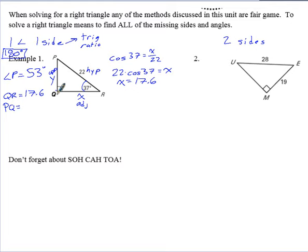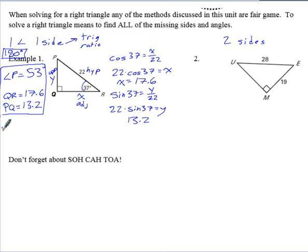And then to solve for PQ, same thing. We can use our reference angle of 37 and do opposite over hypotenuse. Opposite over hypotenuse is sine of 37 equals opposite over hypotenuse. Multiply again both sides by 22. Type that into the calculator again exactly as you see it and you get 13.2. So we've solved the triangle. We solved for all the missing pieces.